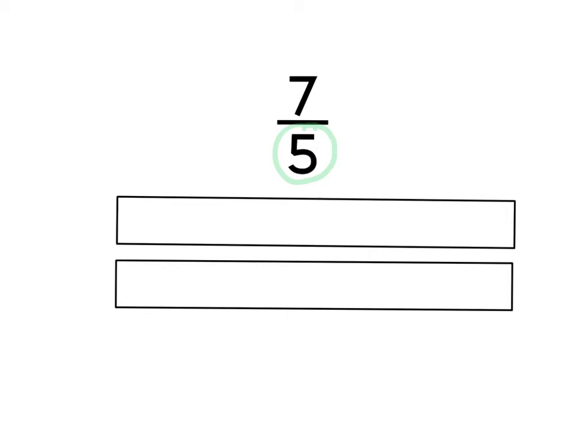So what I'm going to do is partition my first tape diagram into fifths. So 1, 2, 3, 4, and that's going to give me fifths. And I'm going to label each part as a fifth. And the total is 5 fifths.